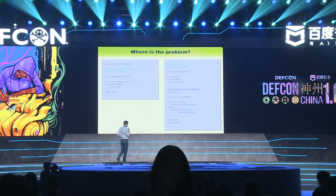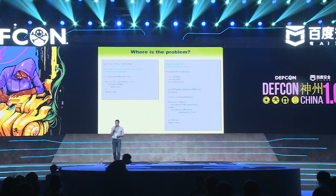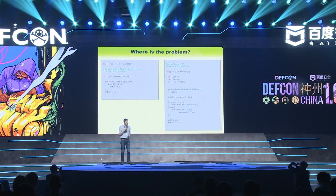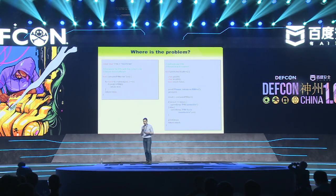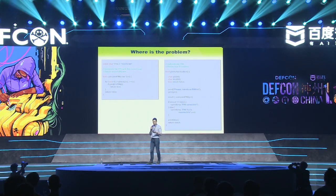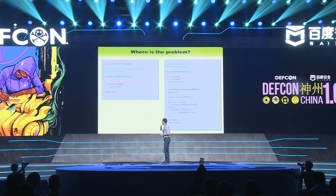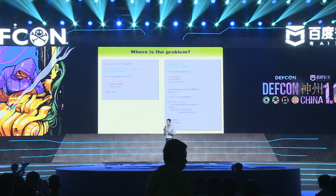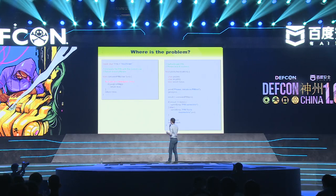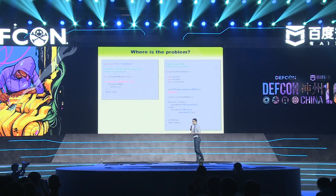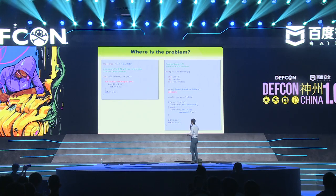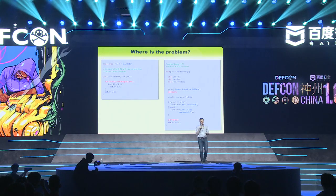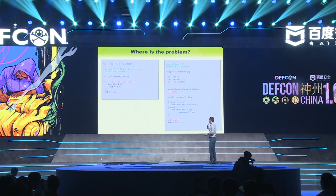Let's look at this code I took from a real product. This code authenticates a PIN or password. There are three software vulnerabilities. First, marked in red, is a loop that only iterates as many bytes as the user provides — so if you provide one byte, only one byte is checked. Second, there's a buffer overflow: the software doesn't check how many bytes you provide, so the buffer can be overflowed and an attacker can get runtime control. And finally, there's a format string vulnerability. All three are well-known and easy to fix.